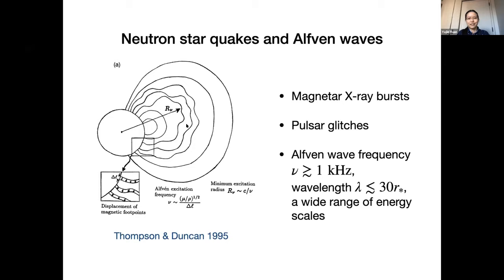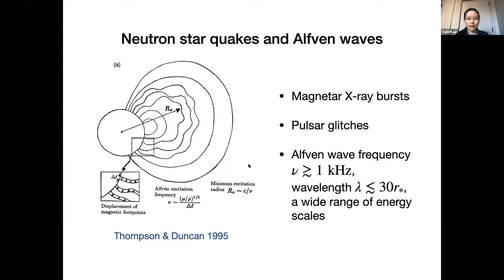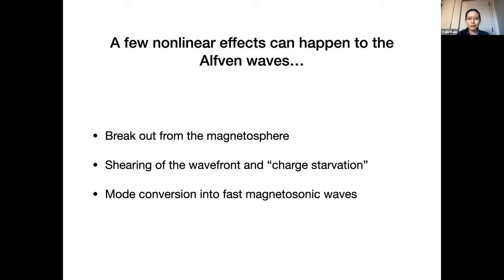Besides magnetar X-ray bursts, another phenomenon involving star quakes is the glitch in pulsars — a sudden change in the spin rate that could also affect radio emission in the magnetosphere. In all these cases, the way crust activity couples to the magnetosphere is by launching Alfvén waves — waves supported by the tension of magnetic field lines that propagate along them. Quake-launched Alfvén waves typically have frequency above one kilohertz and wavelength less than 30 stellar radii.